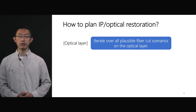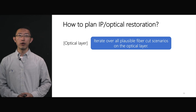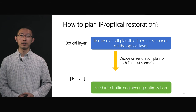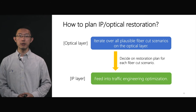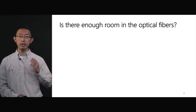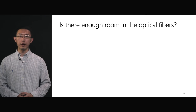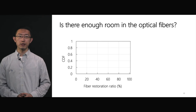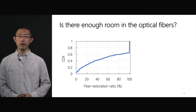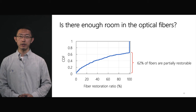A straightforward solution is to separate the optical layer from the IP layer. By iterating over all plausible fiber cut scenarios on the optical layer, we calculate the restoration plan for each scenario that maximizes the total restored capacity in an offline manner. Then, we feed the per-scenario restoration plan into the traffic engineering formulation to optimize traffic flow allocations. To quantitatively answer whether there is enough room in the optical domain, we calculate the restoration ratio of each fiber in a large-scale WAN and plot the cumulative distribution function. We observe that 62% of the fibers are only partially restorable.